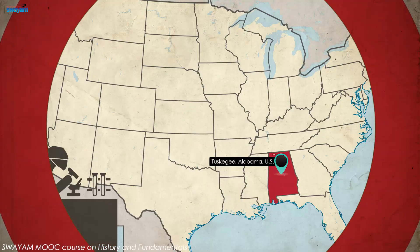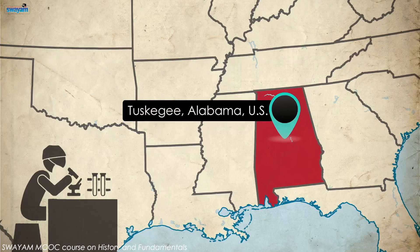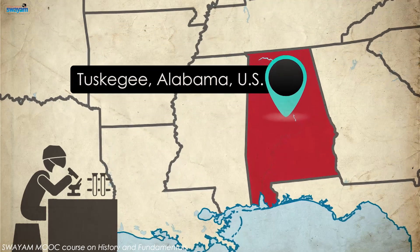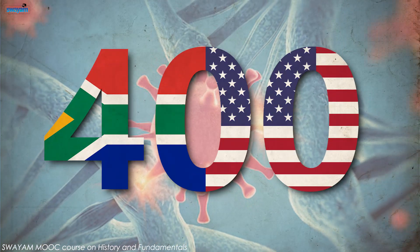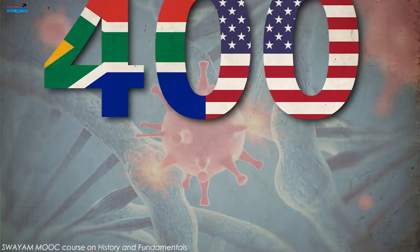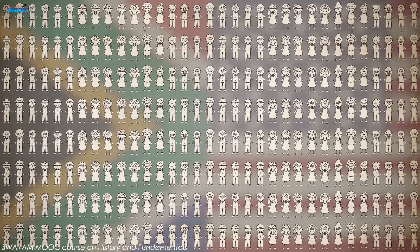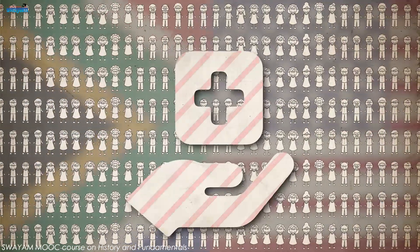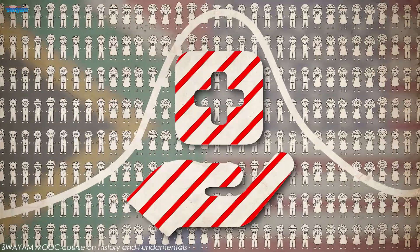The most notorious event which contributed to building ethical standards in America was an experiment in Tuskegee, Alabama, in which treatment was withheld for 400 African American men with syphilis so that scientists could study the course of the disease. Various ethical guidelines were developed in the 20th century in response to such studies. Withholding treatment just to observe disease progression is clearly against ethics.